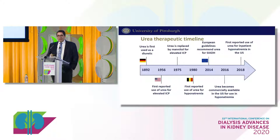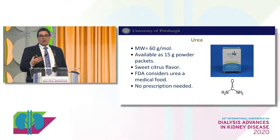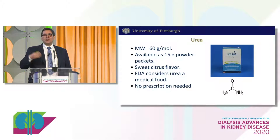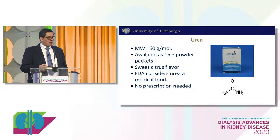Urea is a molecule with a molecular weight of 60 grams per mole. It comes available in the U.S. in powder packets with a sweet citrus flavor, in contrast to the European formulation which is more bitter. The FDA doesn't consider urea as a medication — it considers it a supplement, so you don't need a prescription. Patients can buy it online under the direction of their nephrologist.